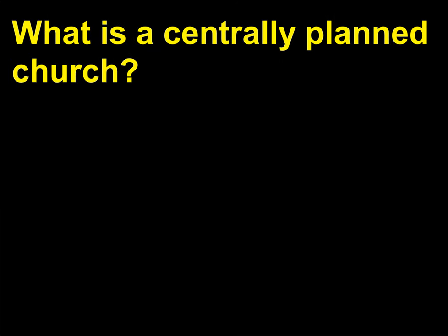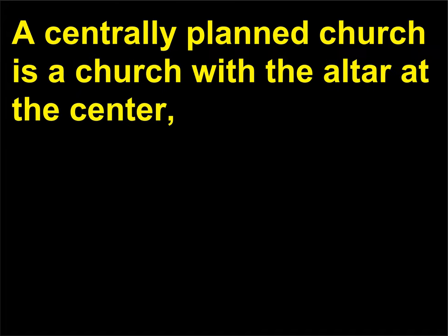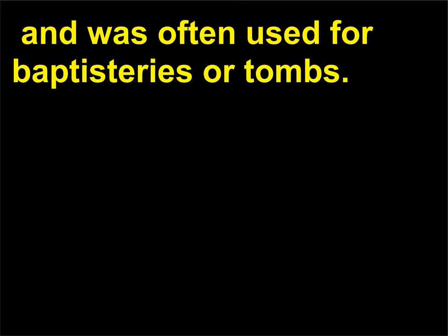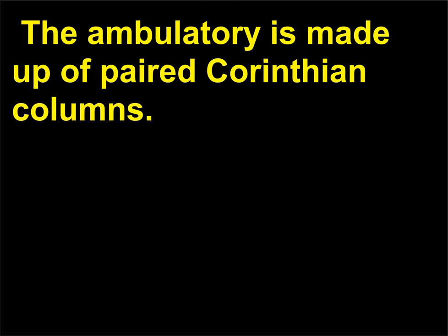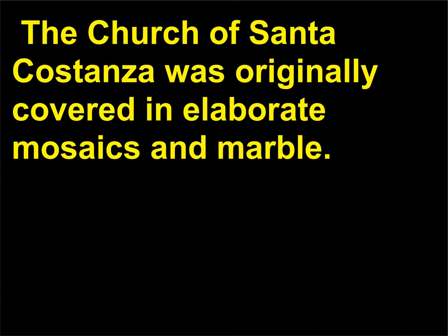What is a centrally planned church? A centrally planned church is a church with the altar at the center, and was often used for baptisteries or tombs. The Church of Santa Costanza is an example of a centrally planned church, featuring a central altar surrounded by an ambulatory made up of paired Corinthian columns. The Church of Santa Costanza was originally covered in elaborate mosaics and marble.